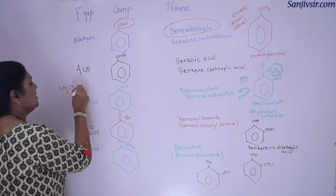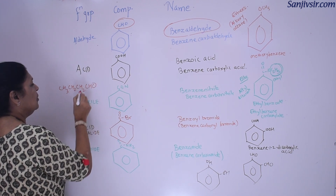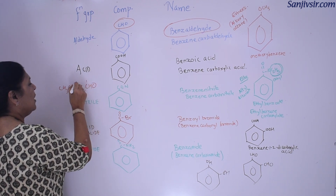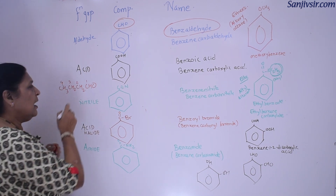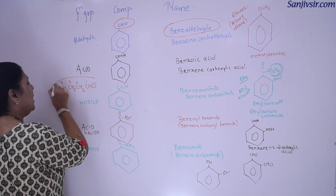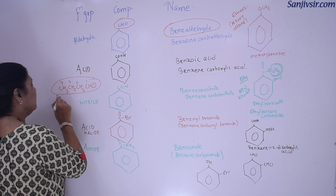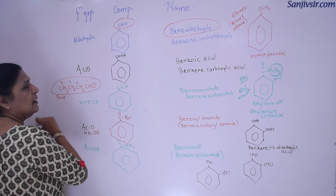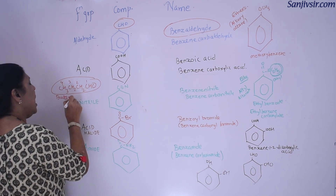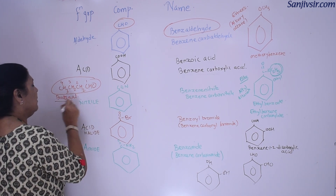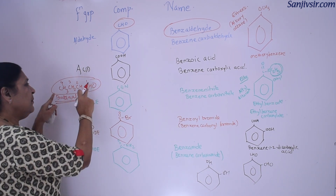For example, in a straight chain like CH3-CH2-CH2-CH2-CHO, we number the carbon atoms one, two, three, four and the name would be butanal — the carbon of the aldehyde is counted in the chain.